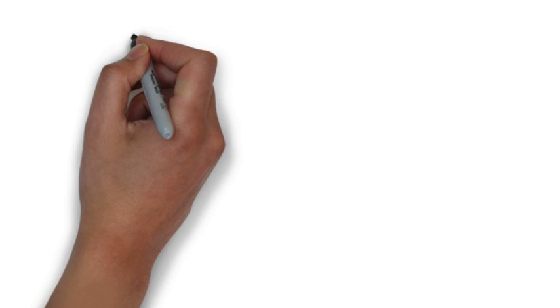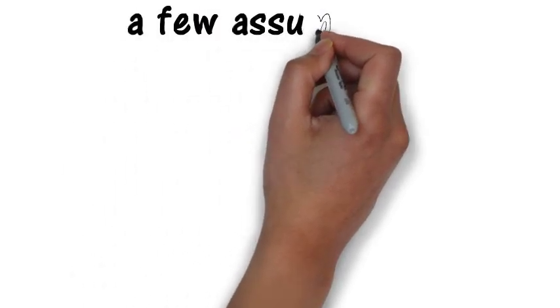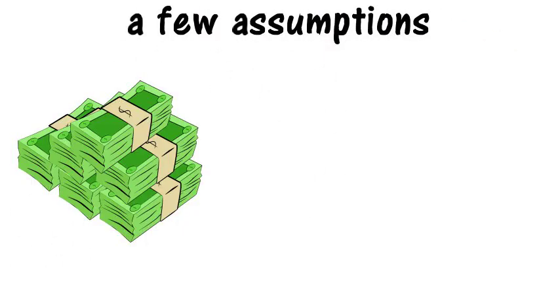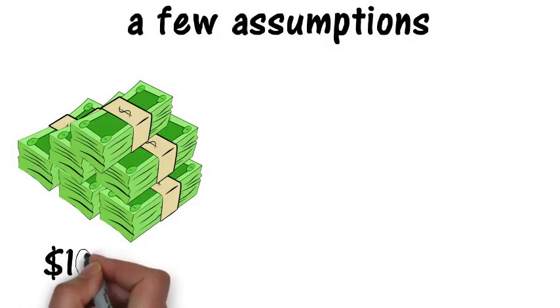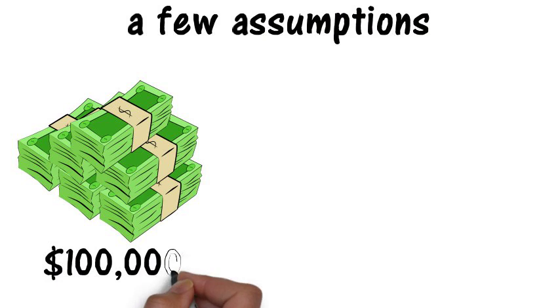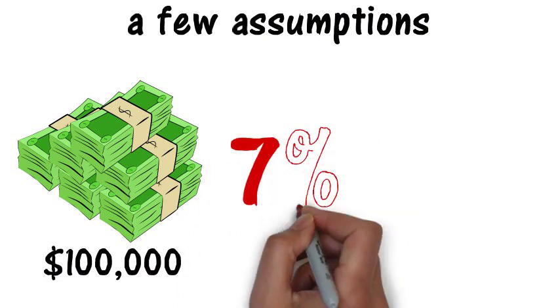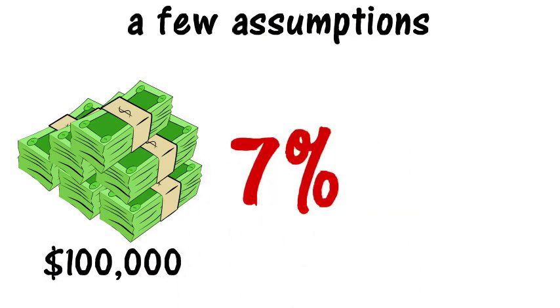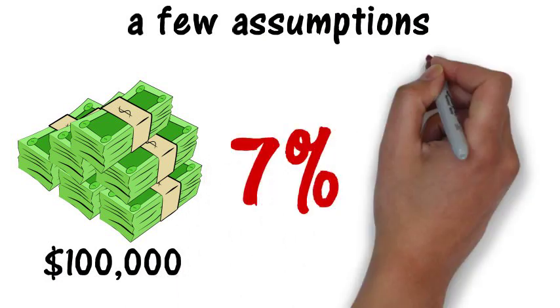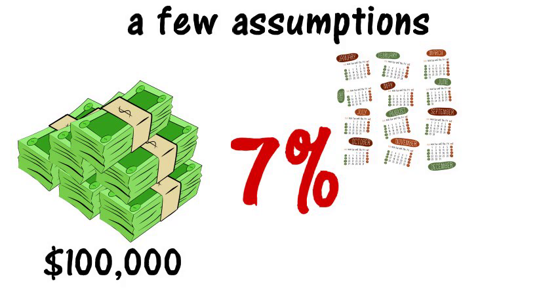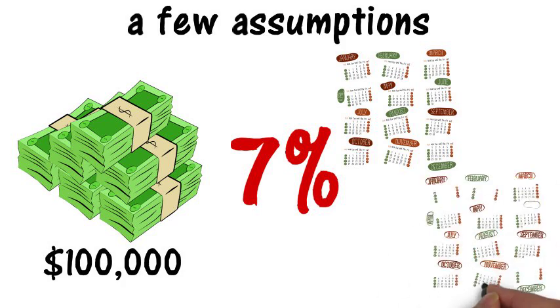We are going to make a few assumptions here. We are going to assume that the loan amount is $100,000, the interest rate is 7%, and that we're going to be using this money over a period of 2 years.